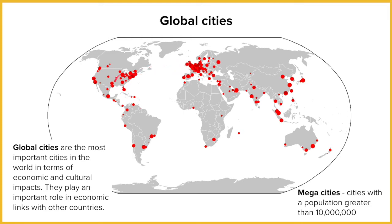For example, the UK had colonies on the east coast of America, numerous colonies around Africa with South Africa being one of them, as well as India and Australia. Even though all of these countries are now independent, they retain international links which makes Europe a large centre for global cities.